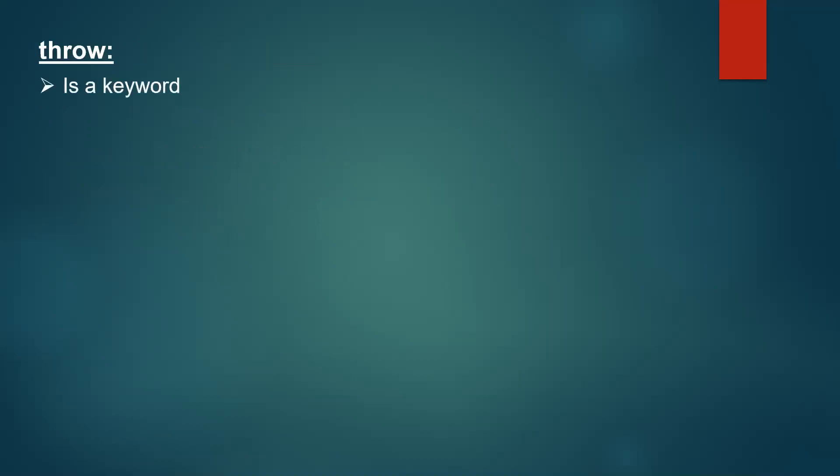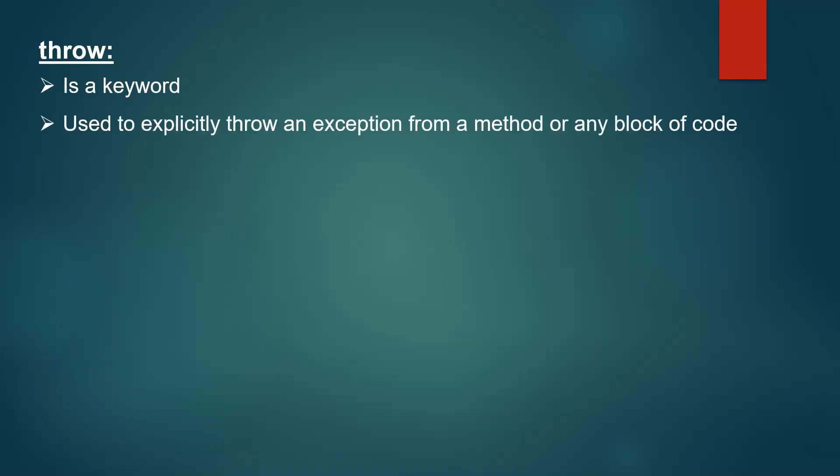Now let us understand what throw is. Throw is a keyword in Java so we can't use it as an identifier. It is used to explicitly throw an exception from a method or a block of code. It's usually a runtime exception, and the developer should not try to catch it — instead we write code to avoid it, or we can issue a throw command wherever the error criteria is met.